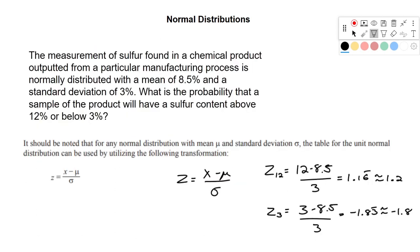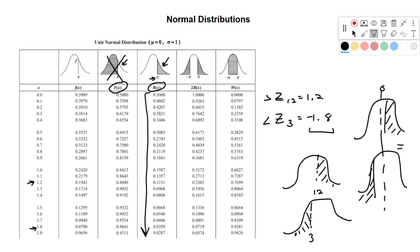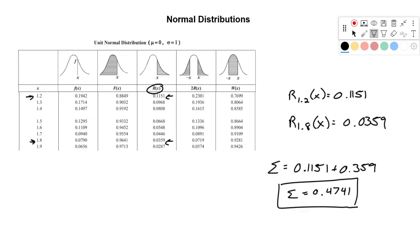So to go back to the original problem, what is the probability that a sample of the product will have sulfur content above 12% or below 3%? The probability is going to be 15.10% or 0.1510.